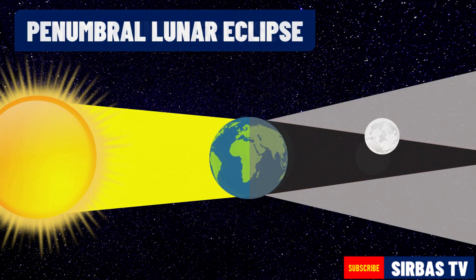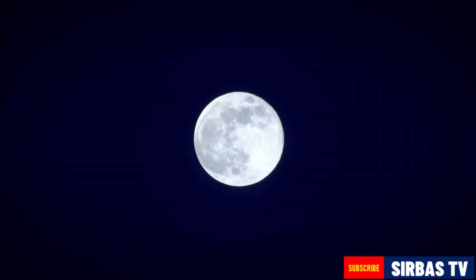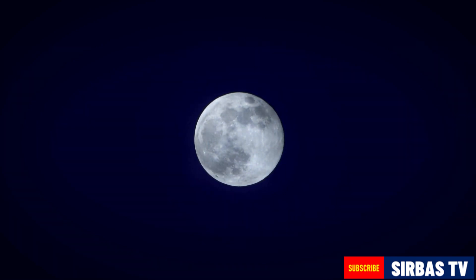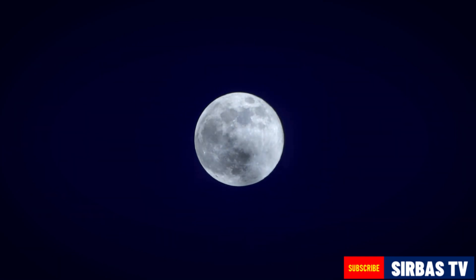When the moon travels on the penumbra of the earth's shadow, a penumbral eclipse happens. This type of eclipse is quite hard to spot, unlike a total eclipse which can turn the entire moon red. A keen observer will see a dark shadowing of the moon's face during a penumbral lunar eclipse.